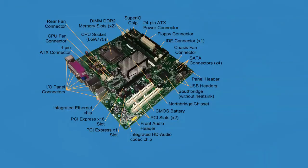Once the existence of the hardware has been confirmed, it must be configured. The BIOS has its own memory storage known as CMOS, or complementary metal oxide semiconductor. The CMOS contains all the settings the BIOS needs to save, such as the memory speed, CPU frequency multiplier, and the location and configuration of hard drives and other devices.